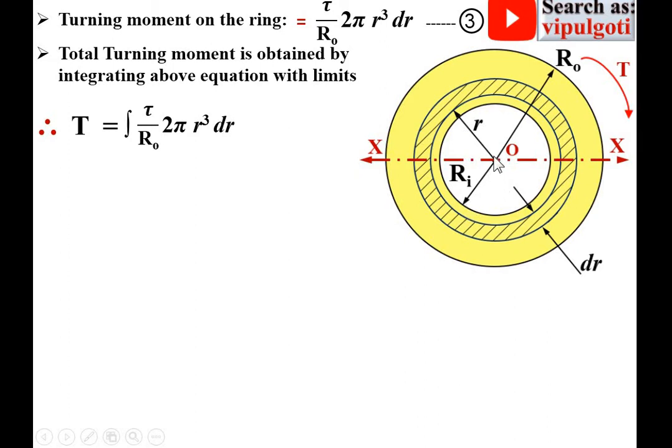From lower to upper limit, RI to RO. Here τ/Ro is constant and 2π is also constant.